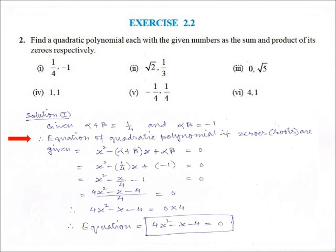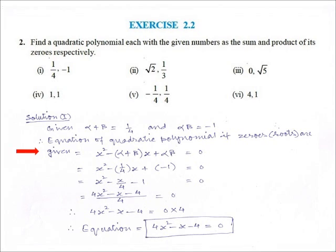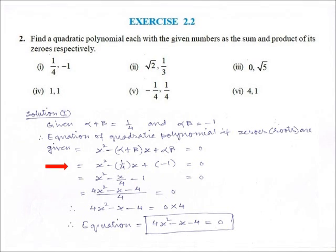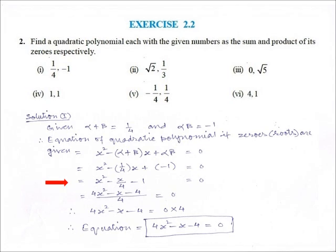Therefore, the equation of the quadratic polynomial, if zeros (that is, roots) are given, is equal to: x² minus (alpha plus beta) into x plus alpha·beta is equal to 0. Now, putting the values of alpha plus beta and alpha·beta, the equation becomes x² minus (1/4)x plus (minus 1), which equals x² minus x/4 minus 1 is equal to 0.